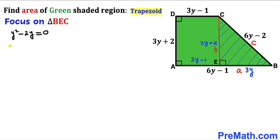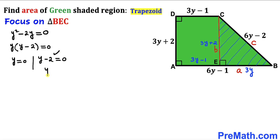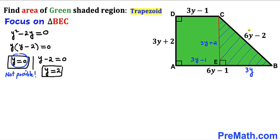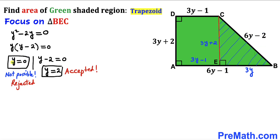We now have a quadratic equation. Factoring out Y: Y(Y minus 2) equals 0. Setting each factor to zero gives Y equals 0 or Y equals 2. Y equals 0 is not feasible because substituting it would make side BC equal to negative 2, which cannot be a valid side length. Therefore we reject Y equals 0 and accept Y equals 2.